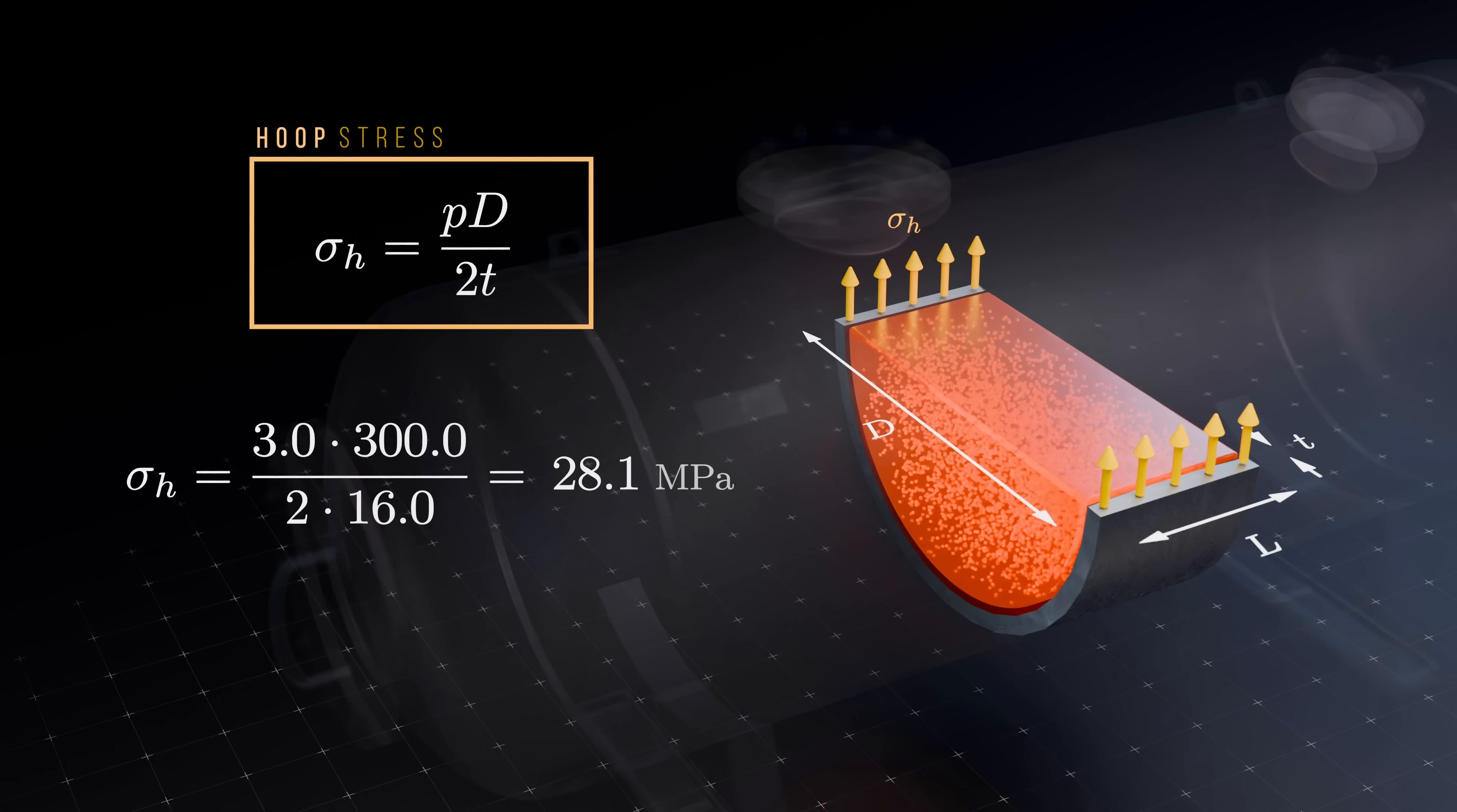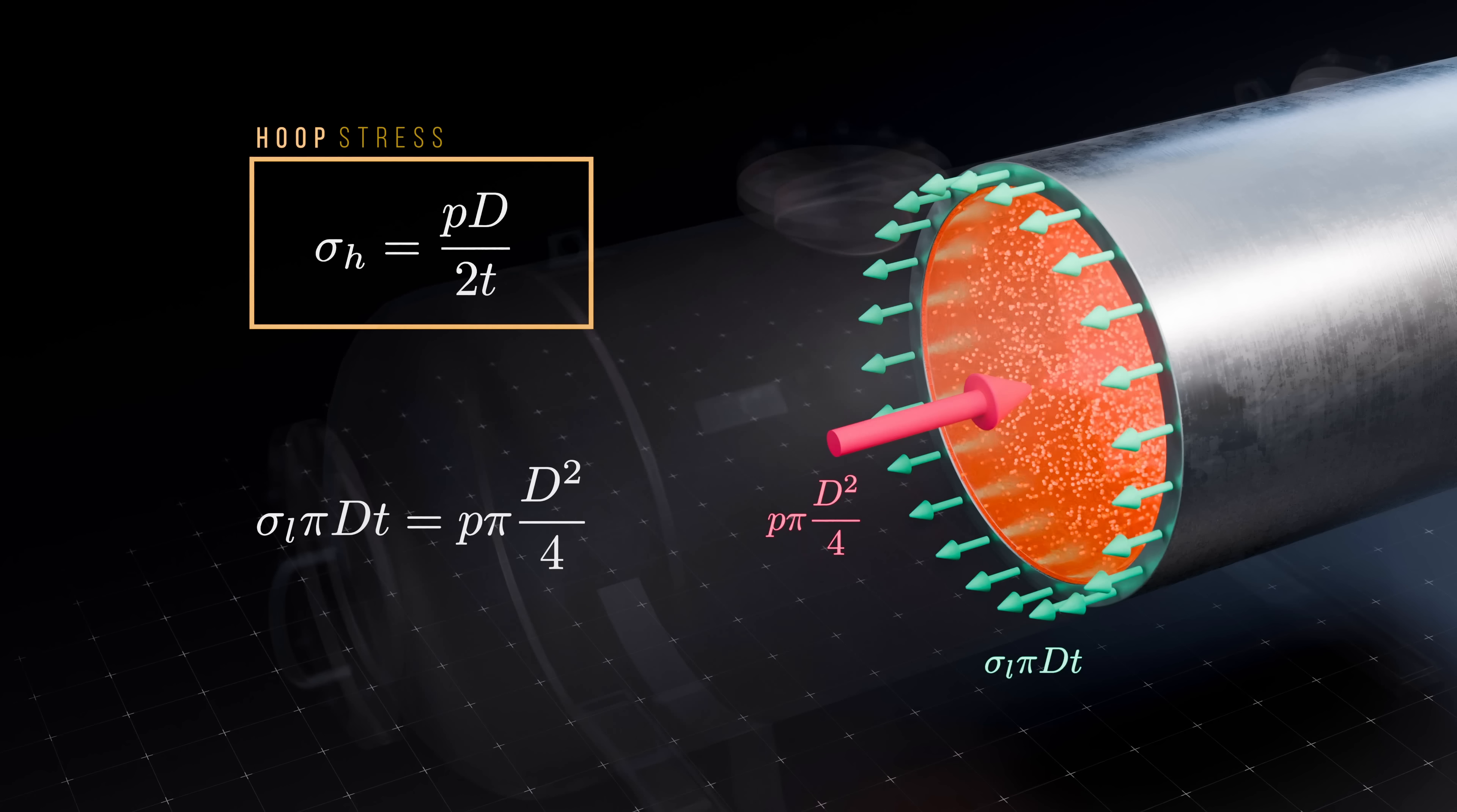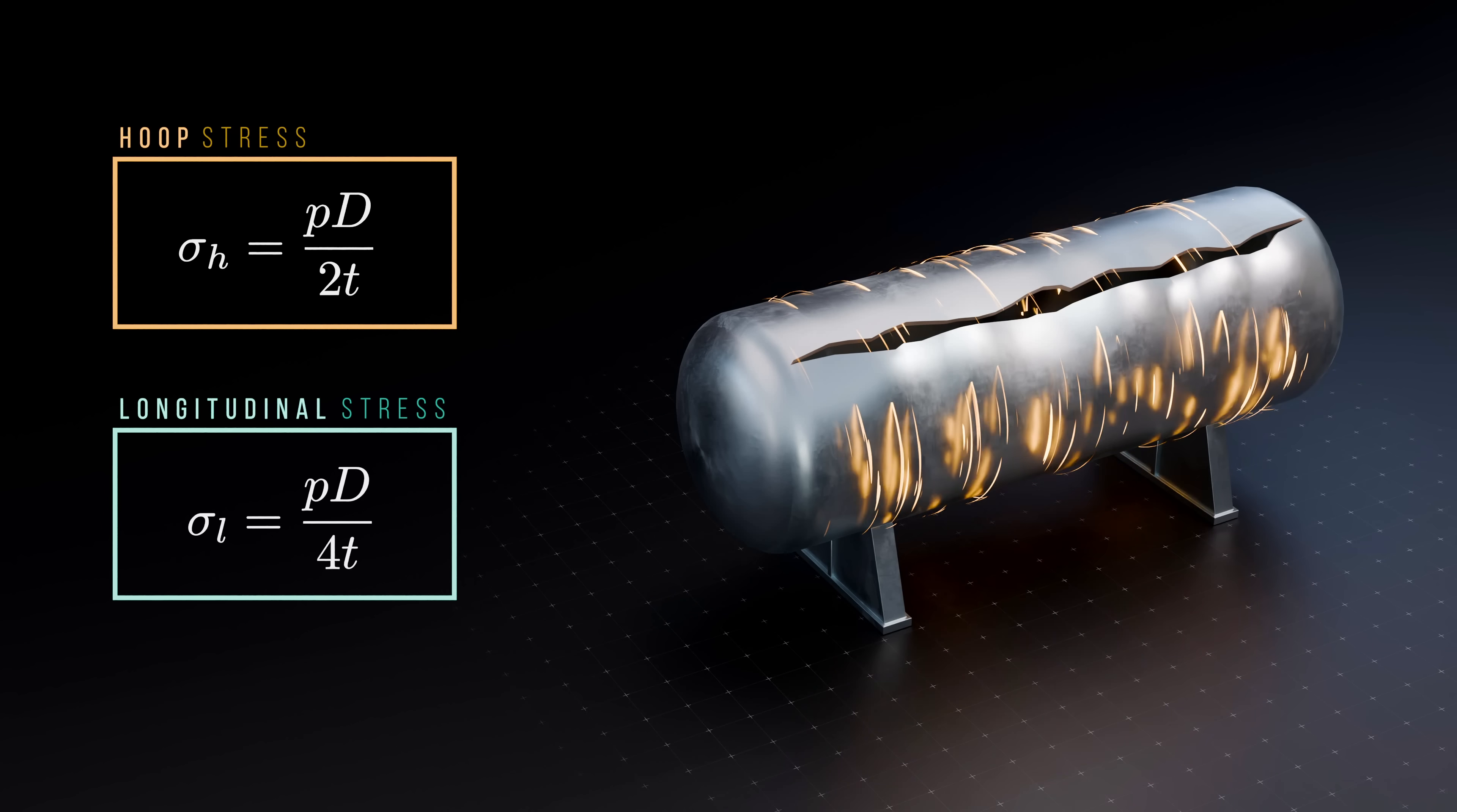We can derive an equation for the longitudinal stress in a similar way, by taking a circumferential slice of the vessel this time. The important insight here is that the hoop stress is twice as large as the longitudinal stress. This means cylindrical pressure vessels are theoretically more likely to fail by splitting along their length, rather than around their circumference, because the material reaches its yield point in the hoop direction long before it does in the longitudinal direction.